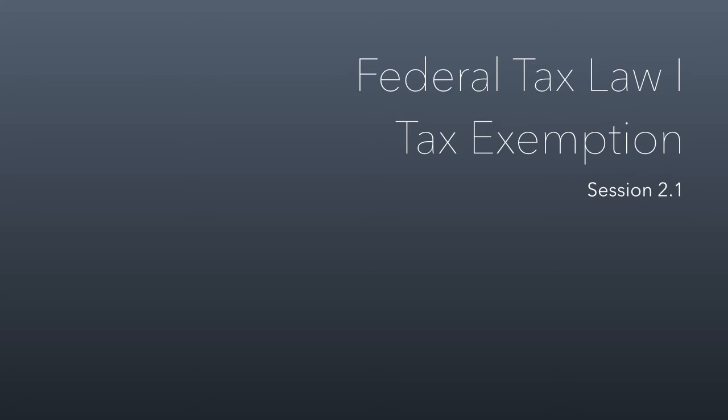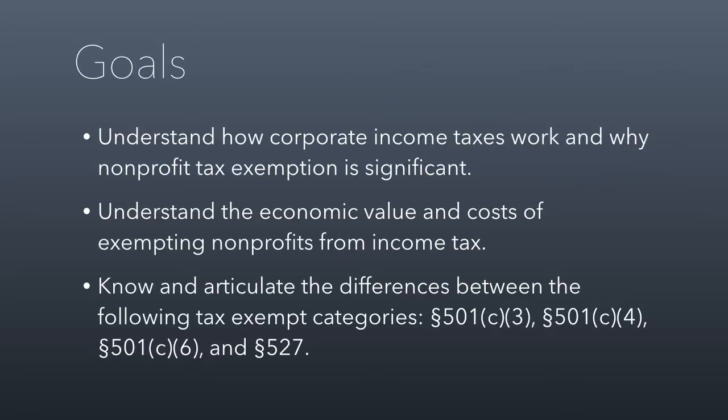In this first class session, we're going to be talking about tax exemption under the federal tax code. I want you to understand how corporate income taxes work and why nonprofit tax exemption is significant. I want you to understand the economic value and costs of exempting nonprofits from the income tax. And then I want you to know and articulate the difference between these four categories of tax exemption: 501c3, c4, c6, and Section 527 organizations.